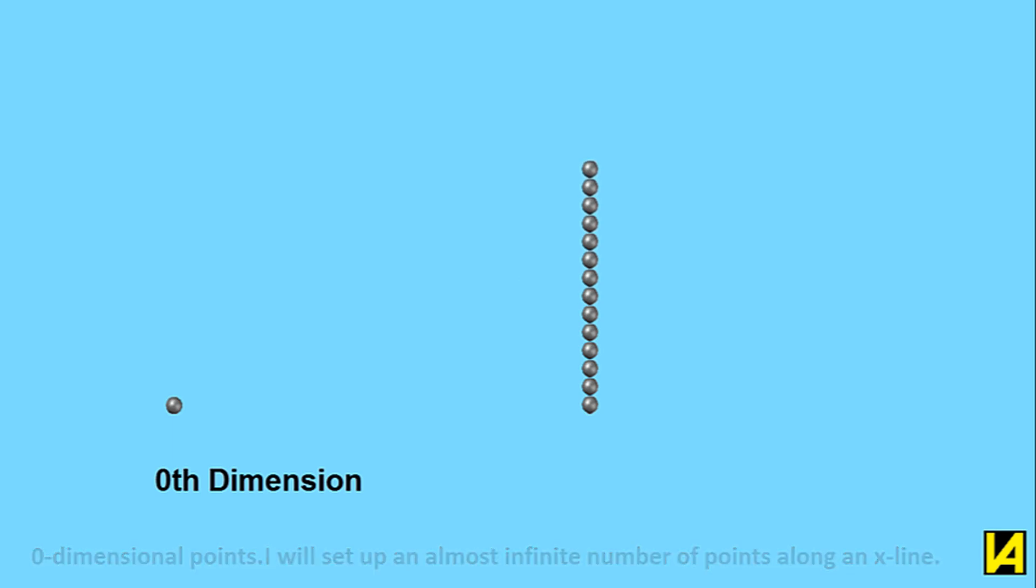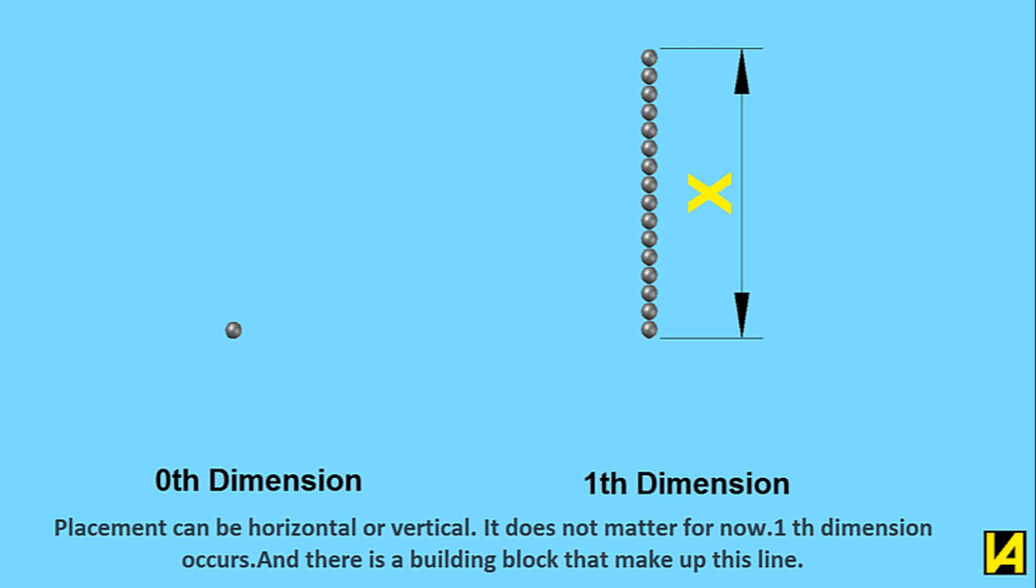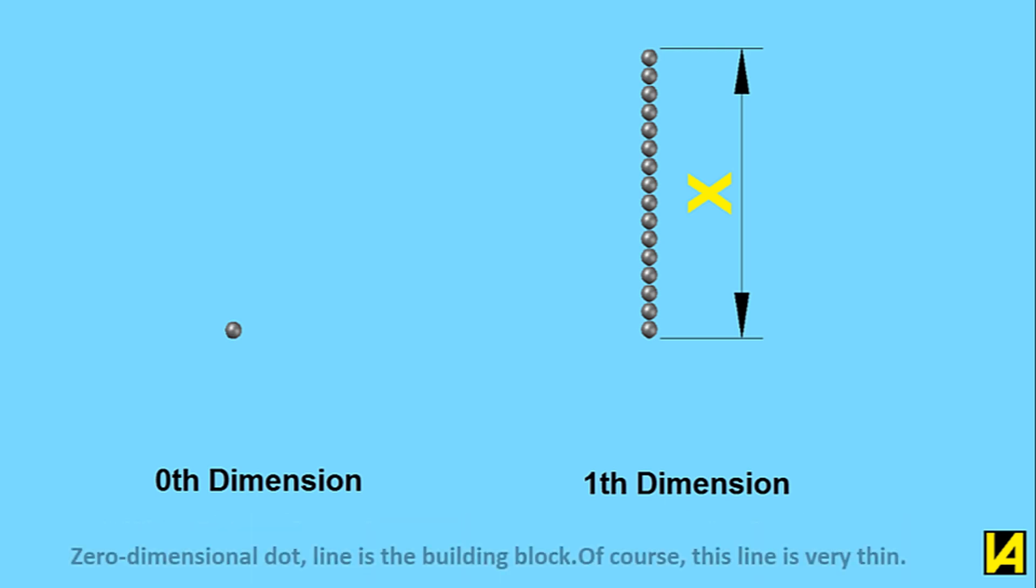I will set up an almost infinite number of points along an X line. Placement can be horizontal or vertical, it does not matter for now. The 1st dimension occurs, and the building block that makes up this line is the zero dimensional dot. Of course, this line is very thin.